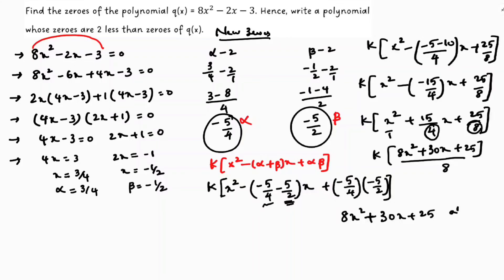This is the required polynomial at k equals 8. So the polynomial is 8x² + 30x + 25.